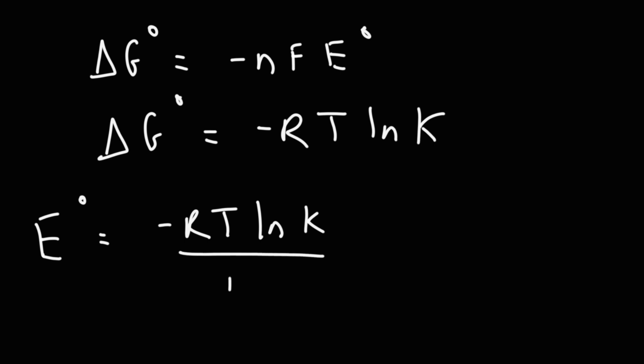Going back to this equation, this is just one of the many ways in which you can calculate delta G. You can also calculate delta G if you know the equilibrium constant K, so it's negative RT ln K. If you set these two equations equal to each other, you can get the cell potential in terms of K. The cell potential is negative RT ln K divided by nF.